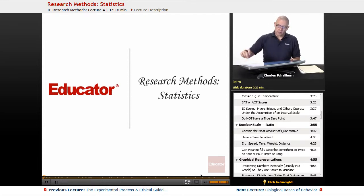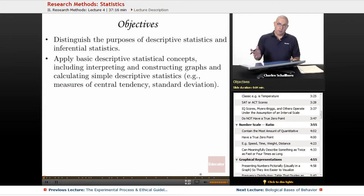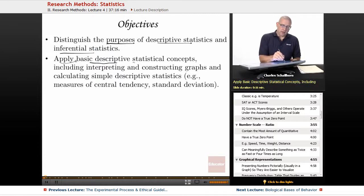As we examine Research Methods, we know that there are a couple of objectives. One is to examine the purposes of descriptive statistics and also inferential statistics. Those are two of the kinds of stats we're going to be looking at. And then we're going to be able to apply the basic descriptive statistical concepts, including interpreting and constructing graphs, and calculating simple descriptive stats, measures of central tendency, standard deviation. And I'll show you how to do that as we go through this particular unit.